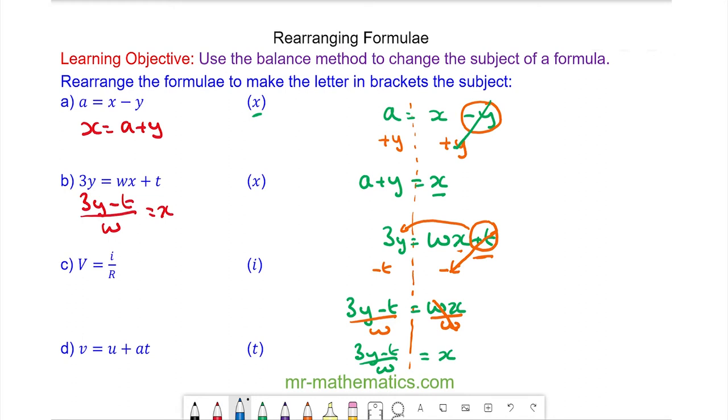For question c we have v equals i over r and we're going to make i the subject. The opposite of dividing by r is multiplying by r so I'll do this to both sides and we have vr equals i because these two will cancel.